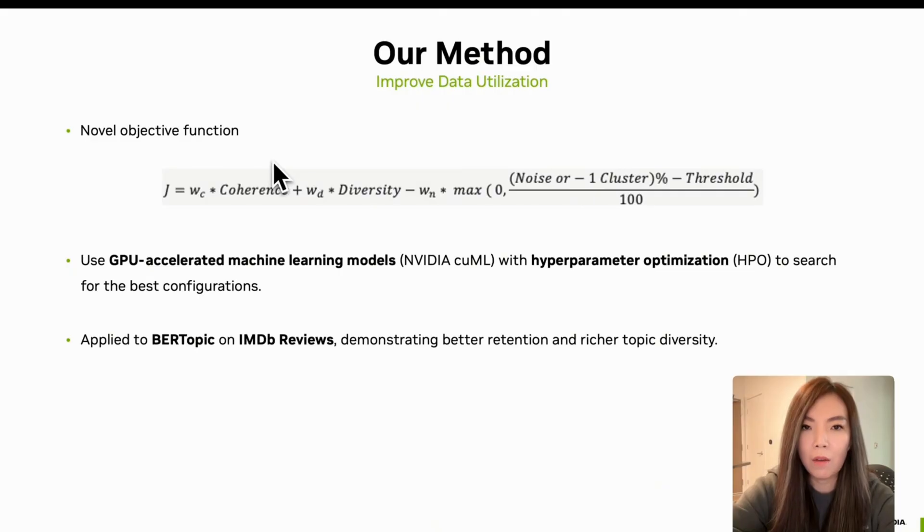As shown in the equation, our objective function is a linear combination of the three metrics. We reward higher coherence and diversity, but we penalize models where the percentage of data labeled as noise. This term ensures we are not losing too much valuable data in the process. We then use an accelerated machine learning model to maximize this function, supported by hyperparameter optimization (HPO) to search for the best configurations.